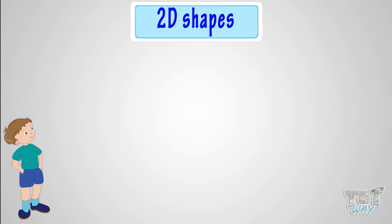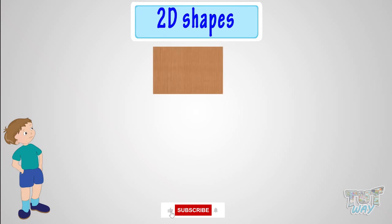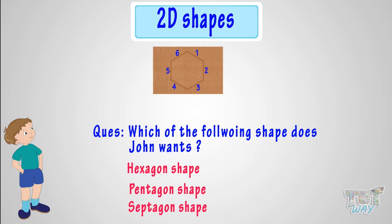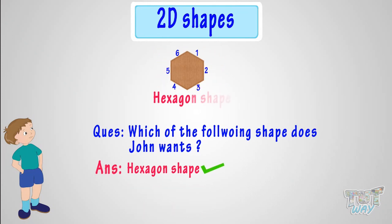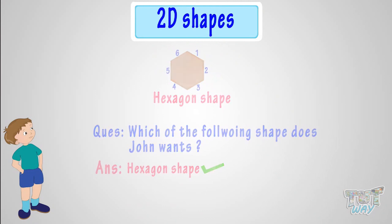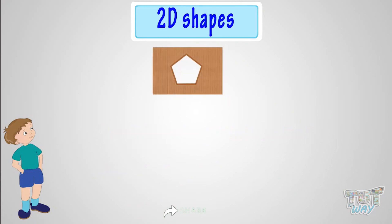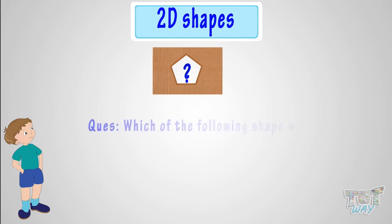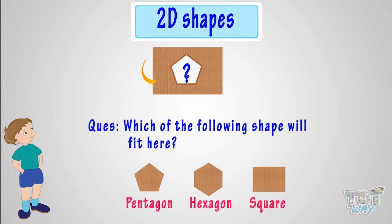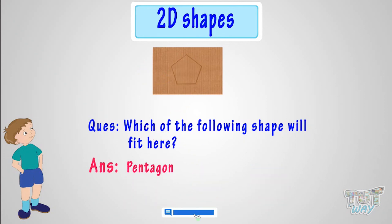John wants to cut cardboard in a six-sided shape. Which of the following shapes does John want? Hexagon shape, as it has six straight sides. Here is a shape cut out from cardboard. Which of the following shapes will fit here? Hexagon shape, as it has five sides.